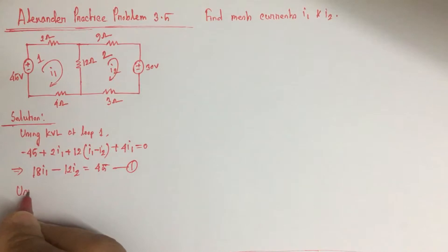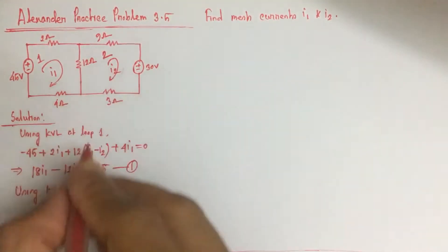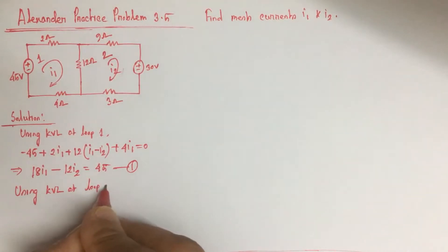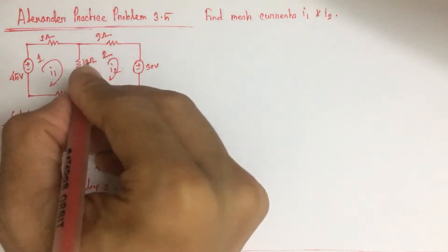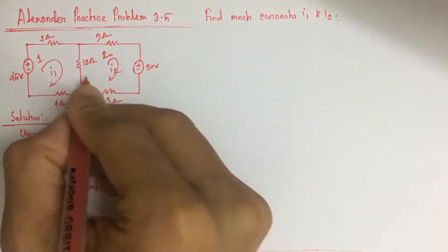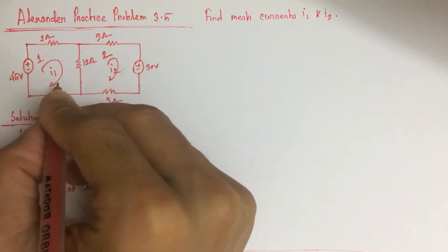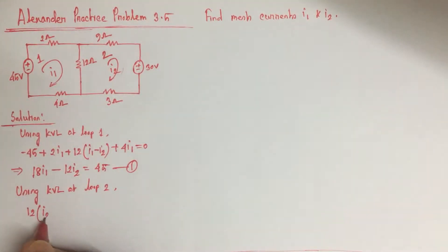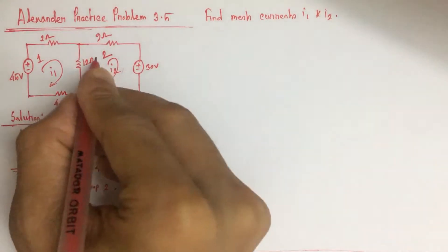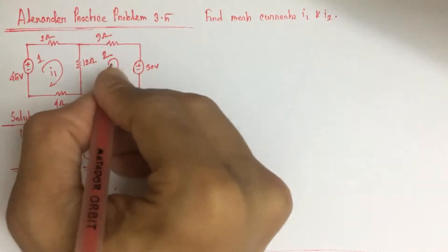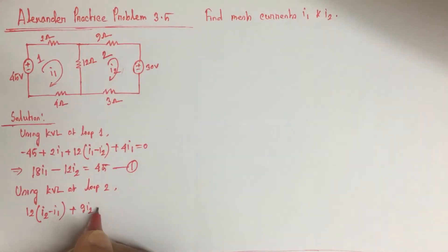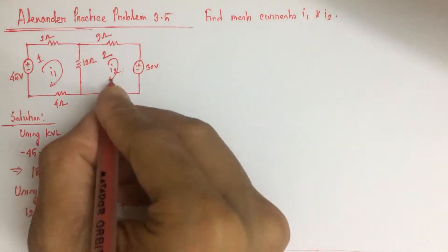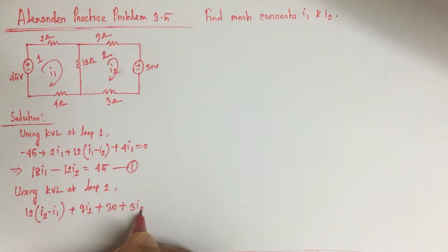Now using KVL at loop 2, we will get 12. Here I2 is going upward and I1 is going downward. So I2 minus I1 plus 9I2 plus 30 plus 3I2 equals 0.